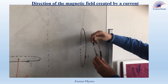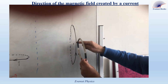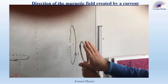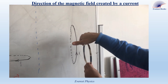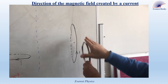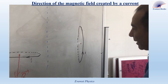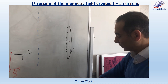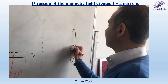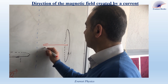In this case, the loop is placed in the vertical plane and the current is as shown. We carry the fingers of the right hand in the sense of the current. As you see, the thumb points to the left. So the magnetic field created by the current at the center of the loop is directed horizontally to the left.